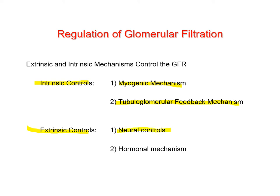Intrinsic controls include a myogenic mechanism and a tubuloglomerular feedback mechanism. Extrinsic controls involve output from the autonomic nervous system — specifically the sympathetic and parasympathetic divisions — as well as hormonal regulation, which is largely extrinsic to the kidney.